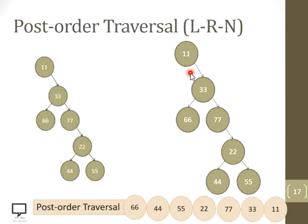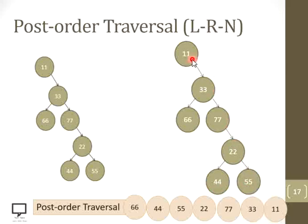The post-order traversal for this binary tree is: 66, 44, 55, 22, 77, 33, and 11.